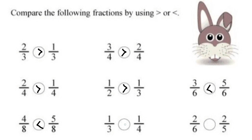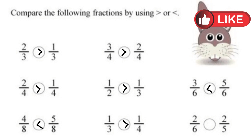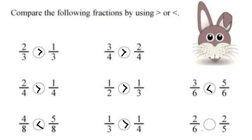1 by 3 and 1 by 4 — numerators are same, so 1 by 3 is greater than 1 by 4. In the next question, 2 by 6 and 2 by 5 — numerators are same. So the fraction with the greater denominator has the lesser value. So 2 by 6 is lesser than 2 by 5 because the fraction with the greatest denominator has the lesser value and the fraction with the smallest denominator has the greater value.